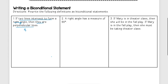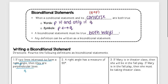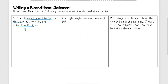To write my biconditional, I'm going to take the hypothesis, in the middle I'm going to write if and only if, and then I'm going to write my conclusion at the end. So that means for this I'm going to say: two lines intersect to form a right angle